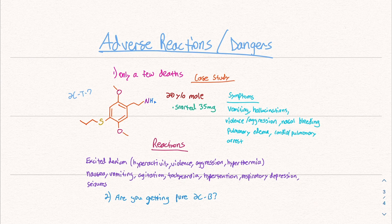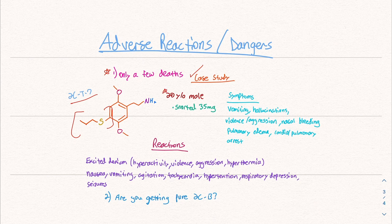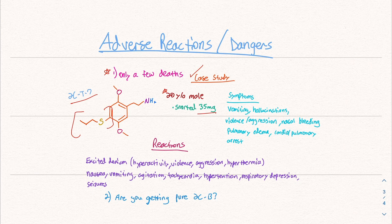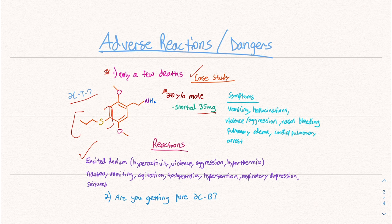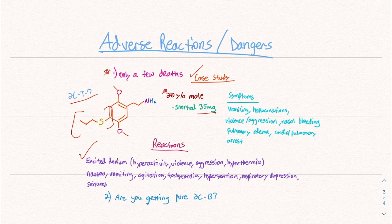So the adverse reaction profile of the 2C compounds is very interesting. There's hundreds of them. So they all affect the body in different ways. There's only been a few deaths. It seems like, at least from the research I did, 2C-T7 seemed to be the most, quote unquote, lethal one. And this one has a puzzle piece with the sulfur structure. So let's do a case study that I found in a research study. So a 20-year-old male died. He snorted from what they determined 35 milligrams. And I think it was 2C-T7. Symptoms included vomiting, hallucinations, violence and aggression, nasal bleeding, pulmonary edema, fluid in the lungs, cardio, pulmonary arrest, heart and lungs stop working. The general reactions of the 2C compounds can include something called excited delirium, hyperactivity, violence, aggression, hyperthermia, too high of a body temperature, opposite of hypothermia, nausea, vomiting, agitation, tachycardia, hypertension, respiratory depression, seizures, and the list goes on.